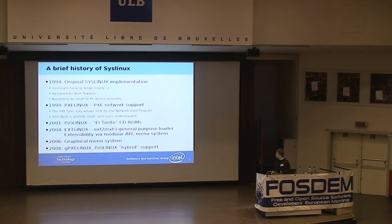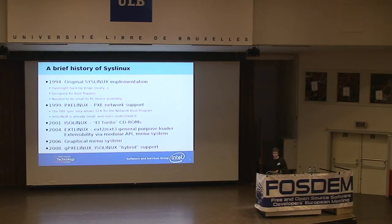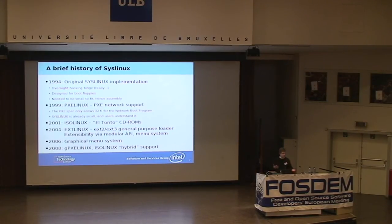In 2006, a lot of people said they would like the menu system, but it wasn't flashy enough. So eventually — fine, fancy graphics, you got it. And in 2008, GPXELinux and ISO Linux hybrid support, which is the USB key feature — the ISO image that also works on a USB key.